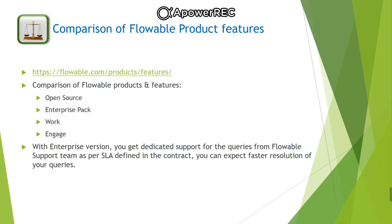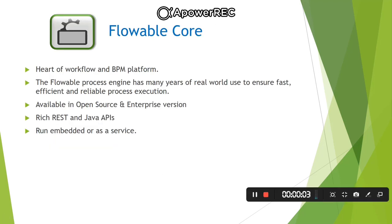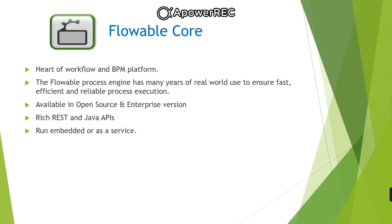Now we will discuss the individual components available in Flowable open source. The first component is Flowable core. All Flowable products are built on top of the Flowable core open source project. Swagger documentation is available on their website. This is the heart of the workflow and BPM platform. The Flowable process engine has many years of real-world use ensuring fast, efficient and reliable process execution. Flowable core provides rich Java and REST API to integrate with end applications and can run as an embedded Java application or as a microservice.